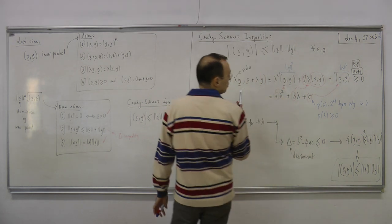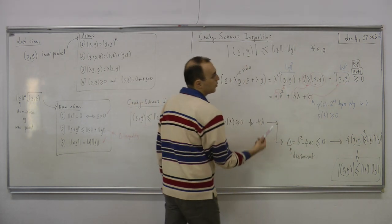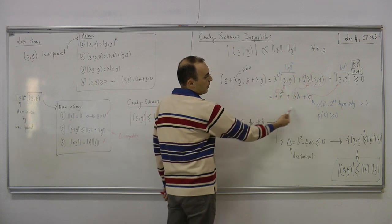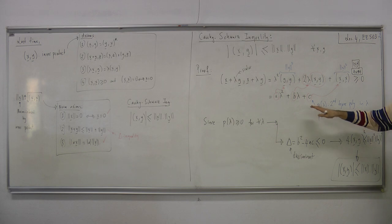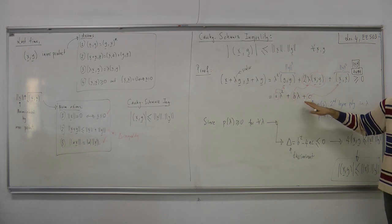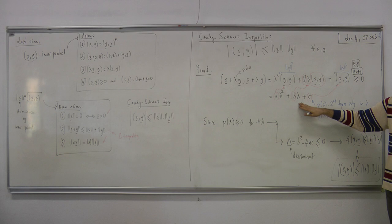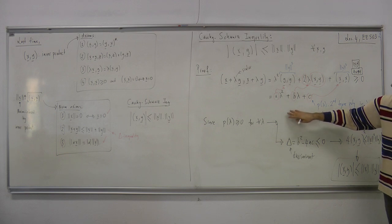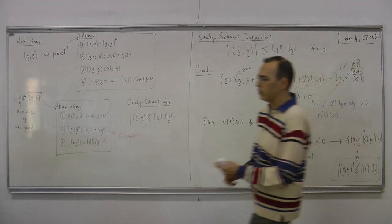We used axiom number 4 to get a non-negative polynomial. This polynomial is second-degree and has either no real roots or a repeated root. The key conclusion is the discriminant condition, which yields Cauchy-Schwarz.